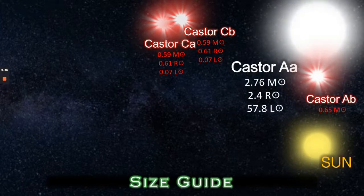Then we realized that there's also Castor AA, a large A-class star with 2.6 solar masses. It also has a smaller red dwarf companion also known as Castor AB, which is around half the mass of our Sun.